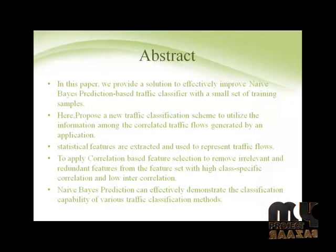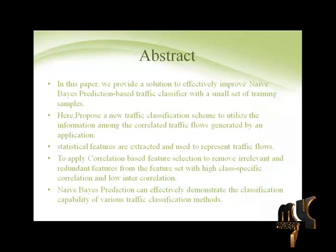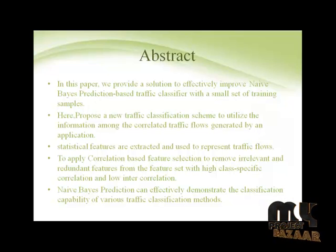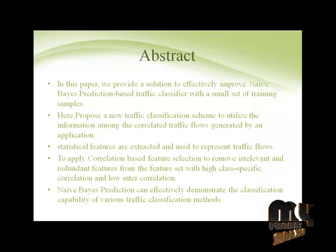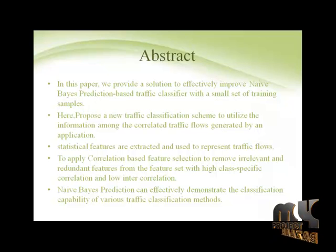In the Naive Base scheme, traffic flows are described using correlated feature subset selection, and flow correlation information is modeled. A traffic classification method is proposed to aggregate the Naive Base prediction of the correlated flows. We also present an analysis on prediction error sensitivity of the aggregation. Our proposed scheme shows better classification performance than existing state-of-the-art methods, which include C4.5 and KNN classification methods.